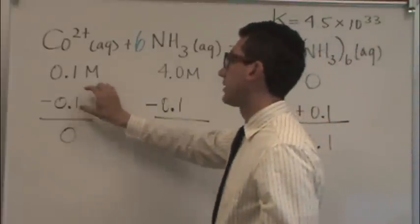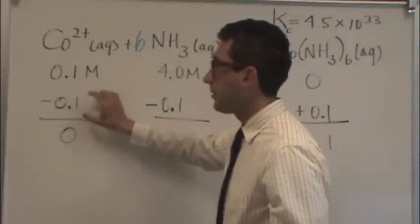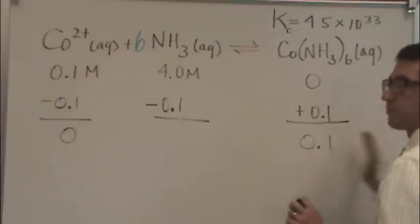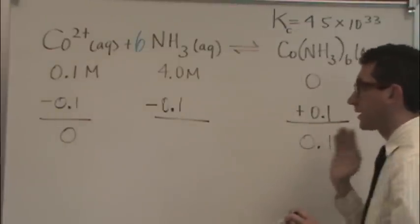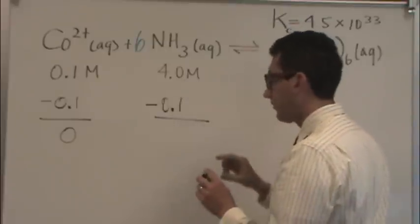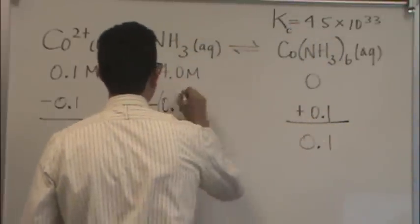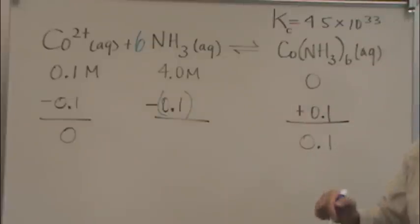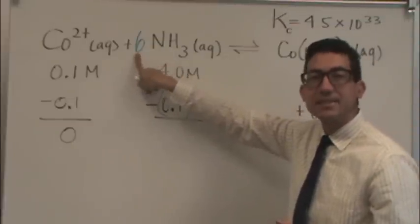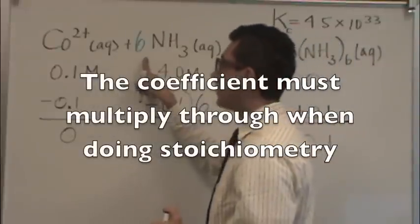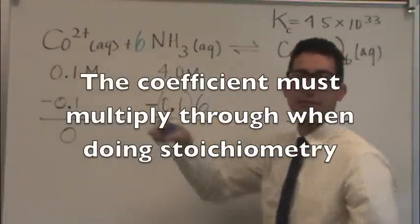This is stoichiometrically subtracting off this same amount here to get 0 there. It all is going to shift to the right-hand side immediately, again, because K is so large. However, right here, there's one small detail. I'm going to have to multiply that 0.1 by 6, because stoichiometrically there's 6 more moles of this than there are of the cobalt.